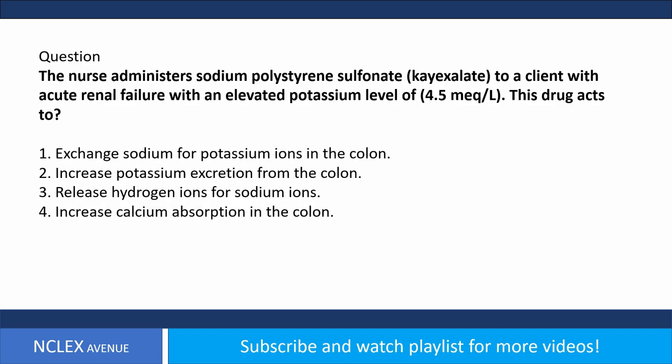Question. The nurse administers sodium polystyrene sulfonate (Kayexalate) to a client with acute renal failure with an elevated potassium level of 4.5 mEq per liter. This drug acts to: 1. Exchange sodium for potassium ions in the colon. 2. Increase potassium excretion from the colon. 3. Release hydrogen ions for sodium ions. 4. Increase calcium absorption in the colon.